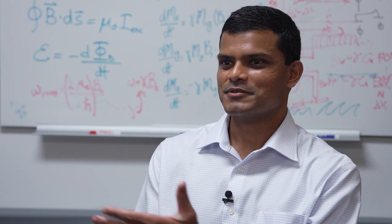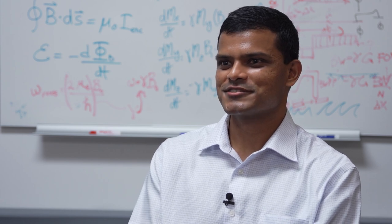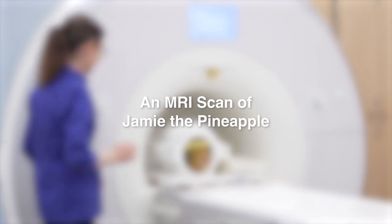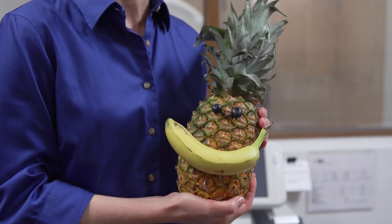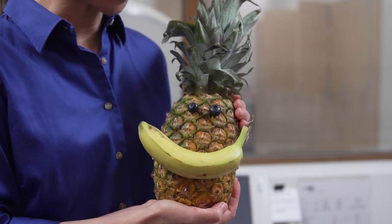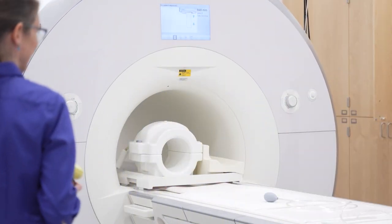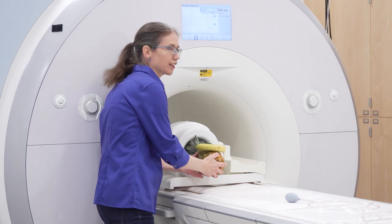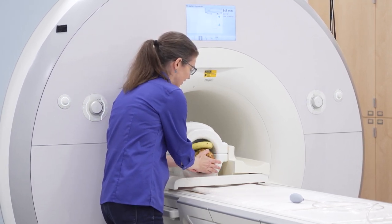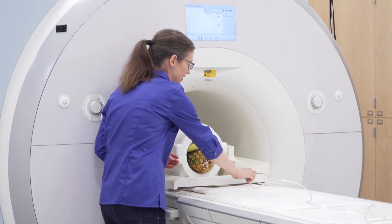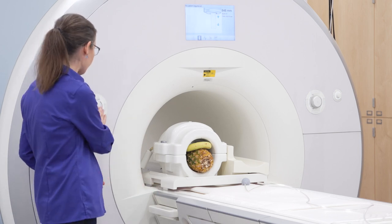Could we try this out? Maybe we can put an item inside the machine and take some pictures? Let's do it. This is Jamie — Jamie is a pineapple, and Jamie also has a lot of water. We're going to bring Jamie in for the scan, get Jamie set up in the coil for a good signal, make sure Jamie has a squeeze ball just in case we need to stop the scan, and send Jamie in.